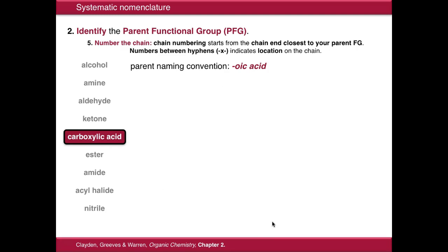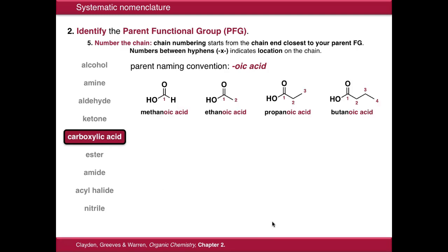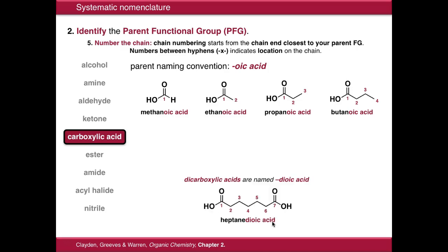Carboxylic acids end in -oic acid. Again, there's no need to number these because they will always terminate a chain. So we have methanoic, ethanoic, propanoic, and butanoic acid. If we have two groups, they're called -dioic acid. No numbering is required, because we know that heptanedioic acid has to have the carboxylic acid groups at the beginning and the end of the chain, by virtue of the fact that this OH is just terminating the chain.